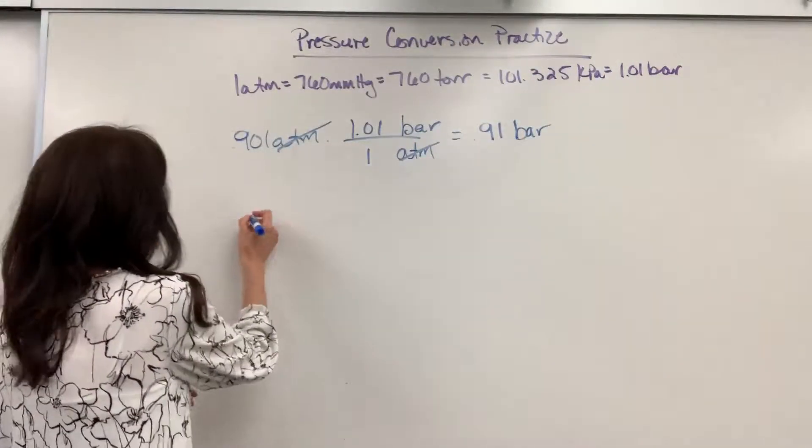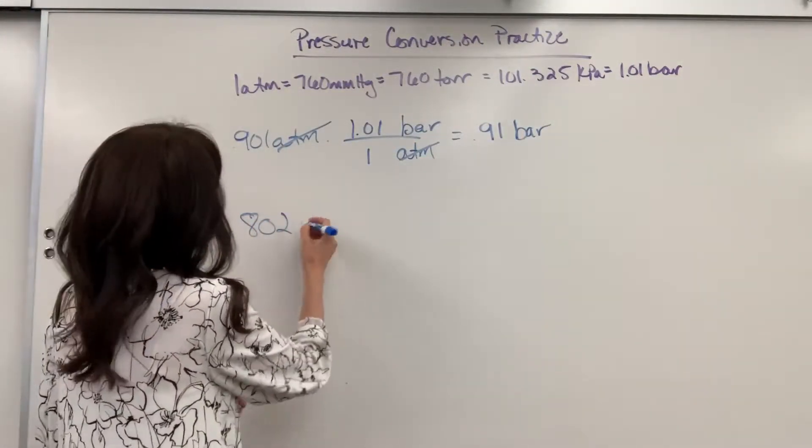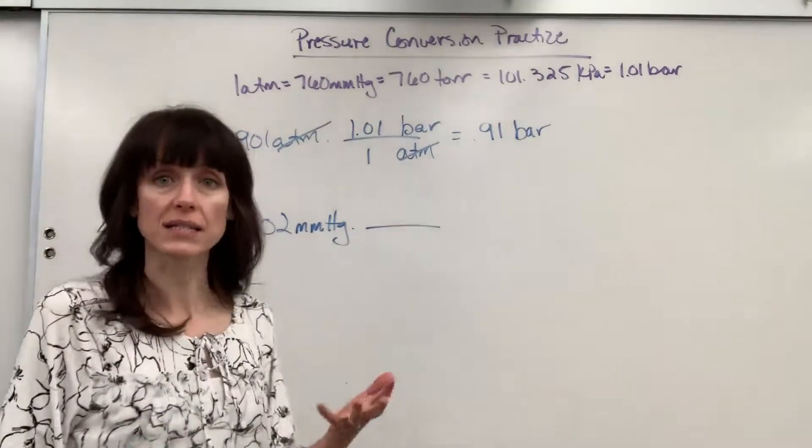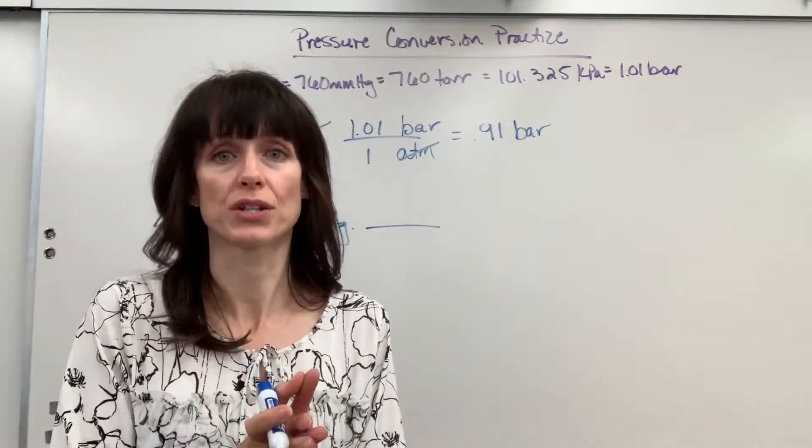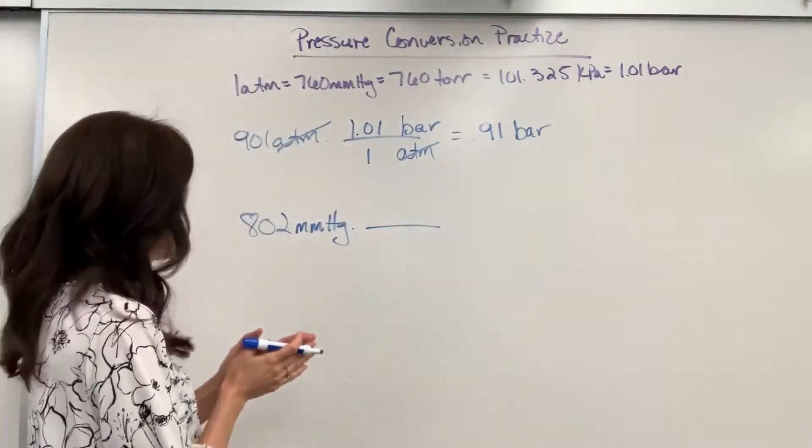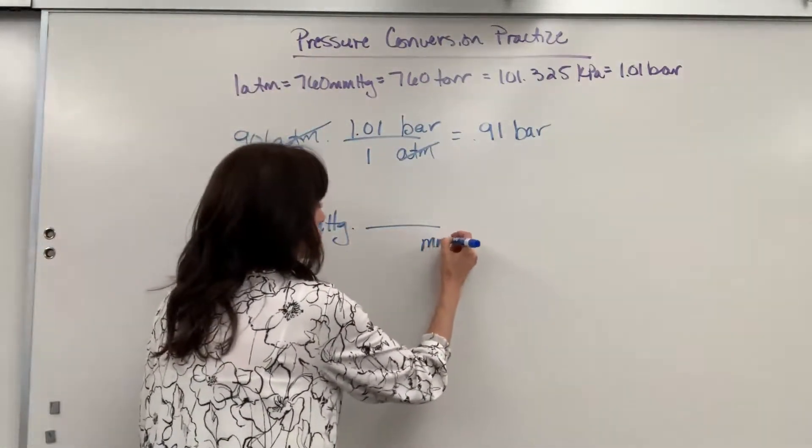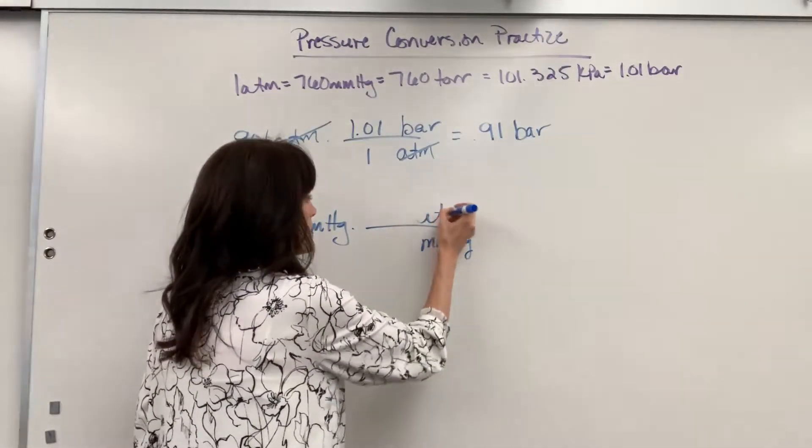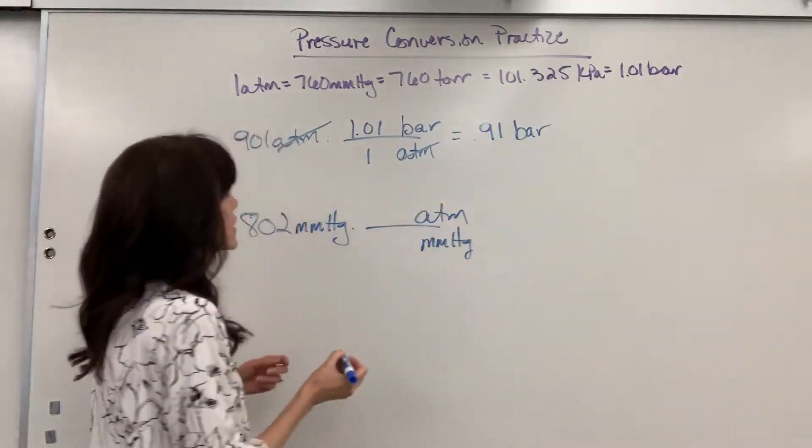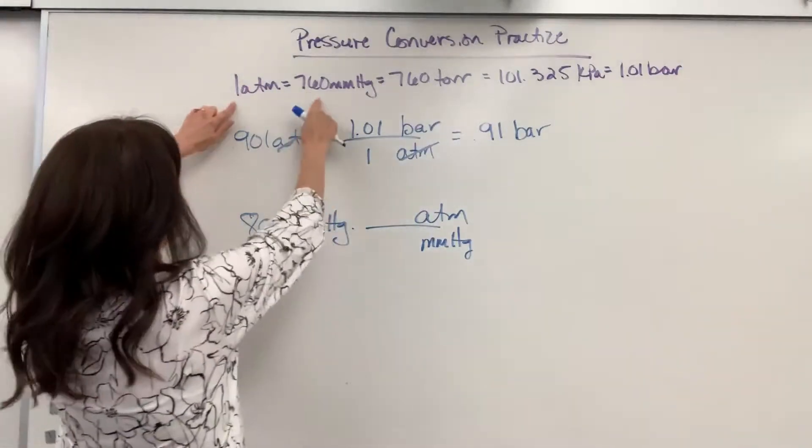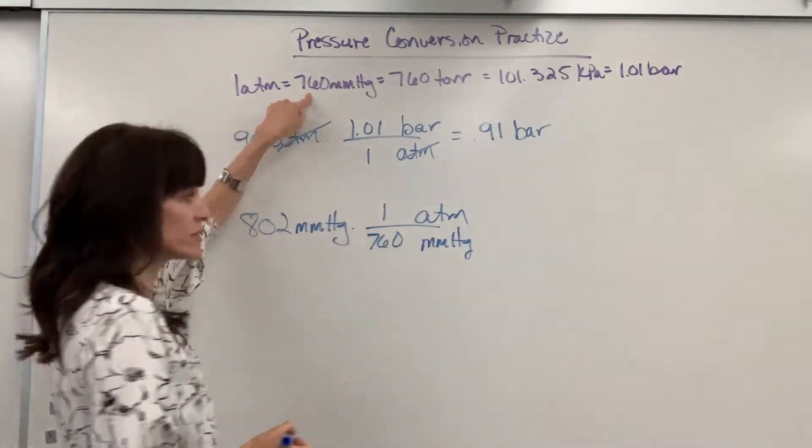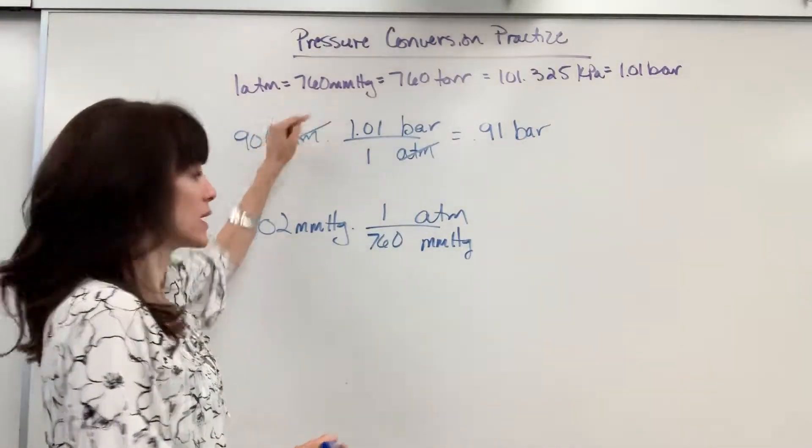So let's pretend that I have 802 millimeters of mercury. I need to use the ideal gas law, so I have to have my pressure in ATM. So we'll put millimeters of mercury in the denominator so they cancel. I want ATM. It goes in the numerator. Then we just attach our numbers. One ATM is equivalent to 760 millimeters of mercury.